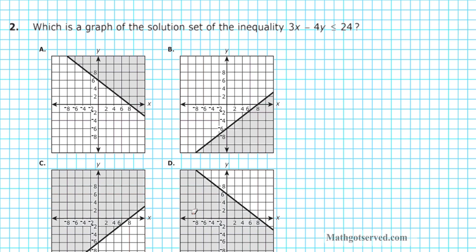Alright, let's take a look at problem number 2. It says: which is a graph of the solution set of the inequality 3x minus 4y is less than or equal to 24. This problem is assessing your ability to graph linear inequalities. Before we get started, let's look at the rules that determine whether the line is solid or broken, and the orientation of our shading.